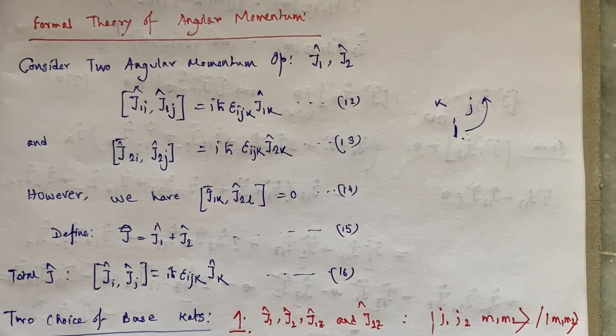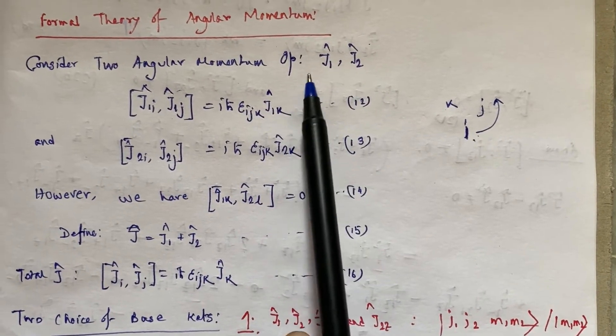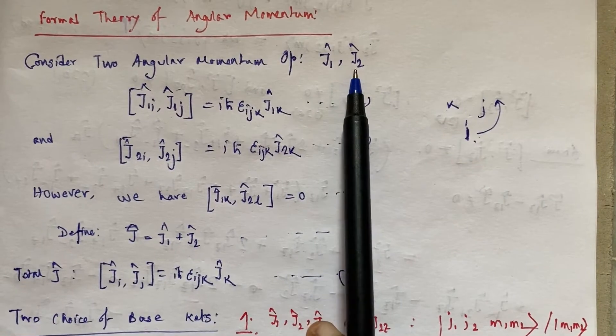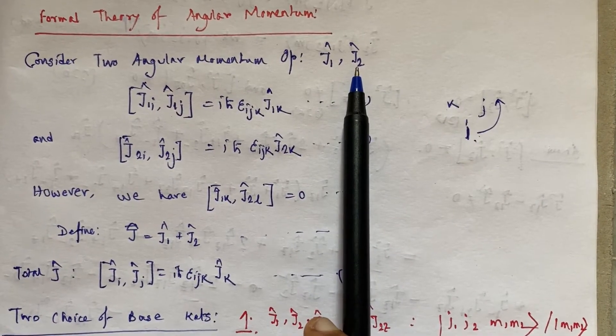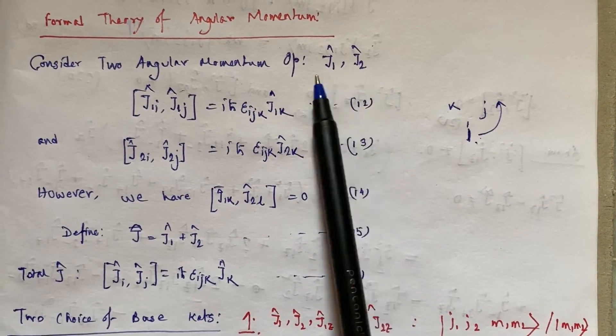Now if there are two angular momentums J₁ and J₂, where J₁ forms a complete subspace and J₂ forms another complete subspace, and components of this J₁ and J₂ commute with each other.